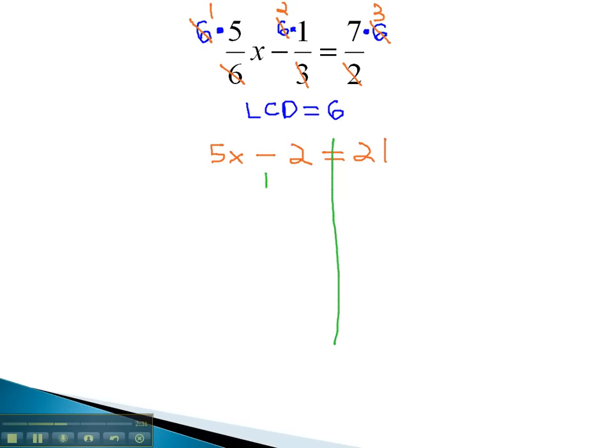We can solve this quickly, then, by adding 2 to both sides, giving us 5x equals 23. And then finally, by dividing both sides by 5 to get our final answer, x is equal to the fraction 23/5.